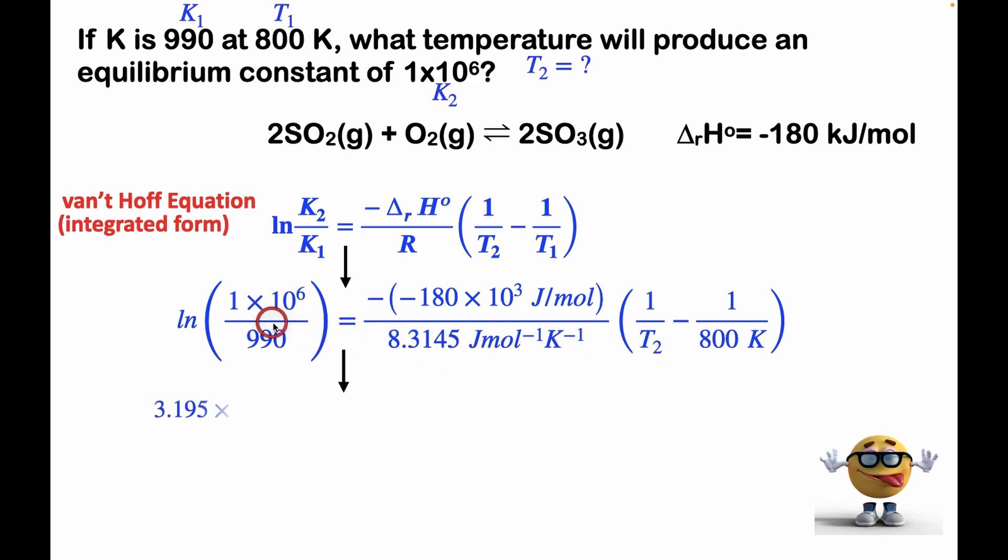And at this point we just want to solve for T2. So what I did was I multiplied both sides by R, and I evaluated this here, and divided by delta H, this part here on both sides. And then if we solve for T2, we get a value of 636 Kelvin.